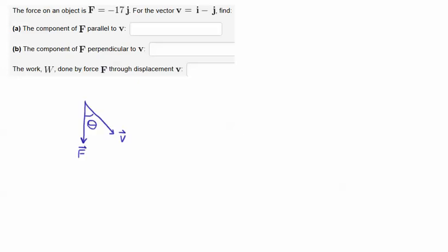Alright, so what we have here is a force vector going down in the negative J direction and then this vector V going down in kind of that direction, an I minus J direction. And recall we have an angle theta between them.